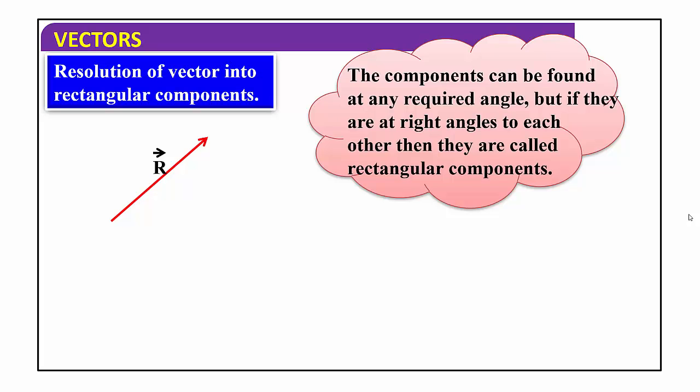The components can be found at any required angle, but if they are at right angles to each other they are called rectangular components. Vector r is divided into two components denoted by Rx and Ry. Rx and Ry are the two components of vector r — this is the resolution of a vector. When we combine Rx and Ry, that gives back vector r.